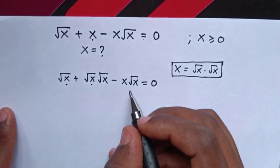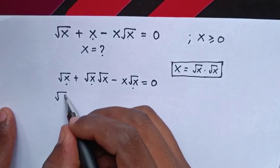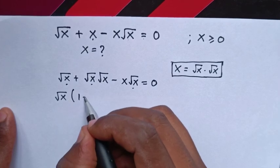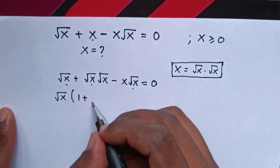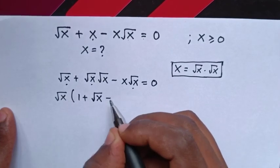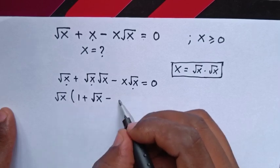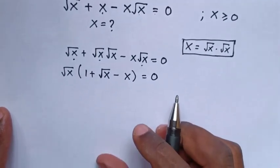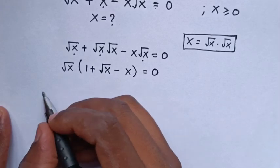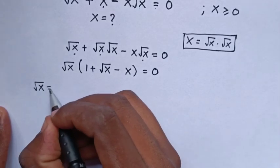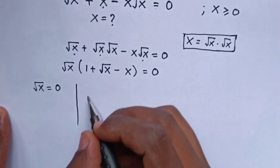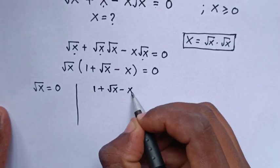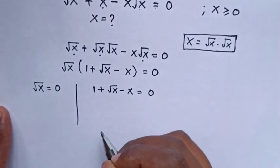We can see square root of x is common, so we factor square root of x out of the bracket: square root of x times (1 + square root of x minus x) equals 0. This gives us two cases: square root of x equals 0, or 1 plus square root of x minus x equals 0.